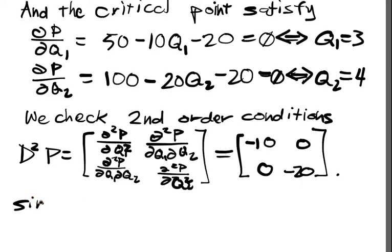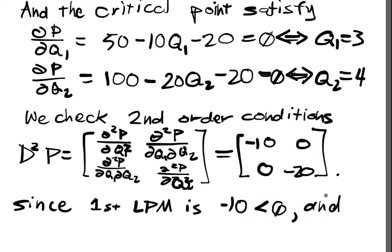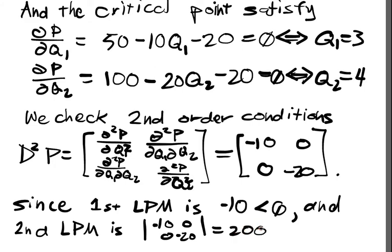And now we check our definiteness of this matrix. Well we've got that the first leading principal minor is negative 10, which is less than 0. And the second leading principal minor is the determinant of [-10, 0; 0, -20], which is equal to 200, which is greater than 0.